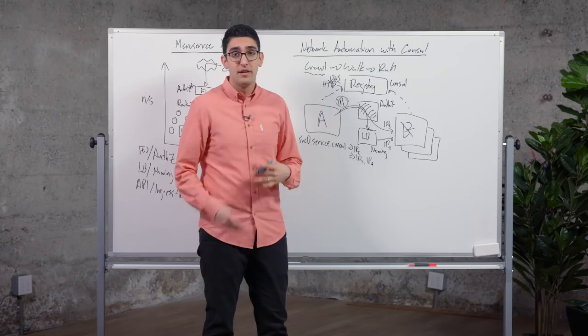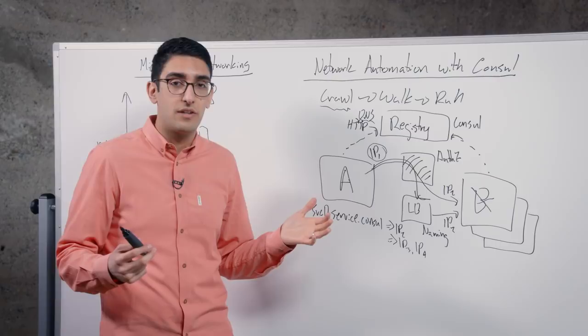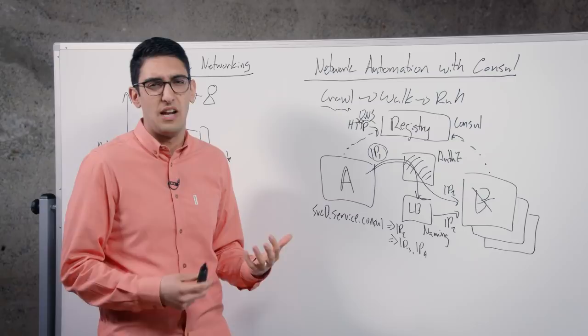We start to move away from using a load balancer just as a fixed naming device and really only need to use it in the cases where there's many millions of requests being made or thousands of requests per second and we need to have a load balancing capability, not just a naming capability. This becomes the crawl.